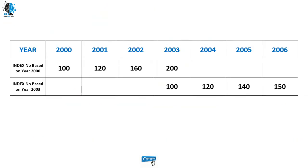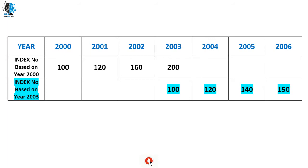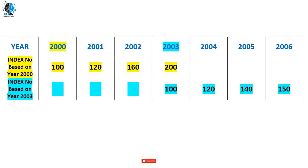Let's look at this data again. Here we have an index number based on the year 2000 and an index number based on the year 2003. The index number based on 2000 exists till 2003 with 2000 as its base year. The next series has 2003 as its base year. Now, using the 2003 base year series, we need to find the index numbers for 2000, 2001, and 2002.